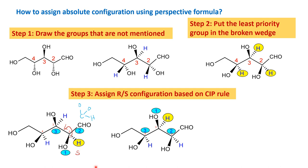Now let us go to carbon number 3. Hydrogen again has the least priority, and OH gets the first priority. Between the two adjacent carbons — carbon 2 and carbon 4 — OH and H are common, so the differentiator is the third substituent. Carbon 2's chain carbon has 2 hydrogens and 1 oxygen bond, whereas carbon 4's side has 1 hydrogen and 2 oxygen bonds — so carbon 2's side gets priority 2 and carbon 4 gets priority 3. The order of numbers comes in the clockwise direction, so the assignment is R.